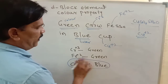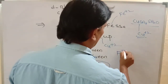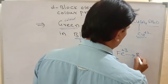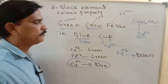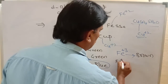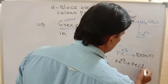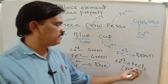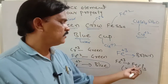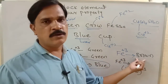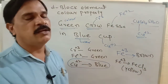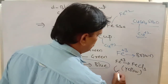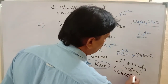Remember: ferrous (Fe²⁺) is in green color. But ferric (Fe³⁺) is always in brown color. There is one exception: Fe³⁺ in FeCl₃ (ferric chloride) is in yellow color. So Fe³⁺ is brown color generally, but yellow color specifically in FeCl₃.